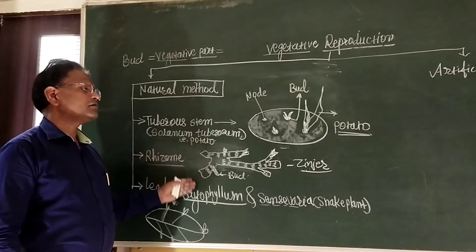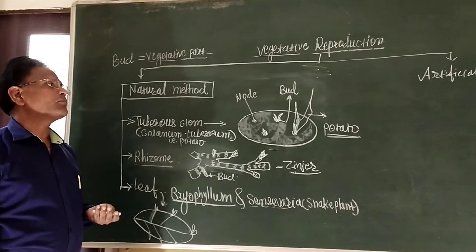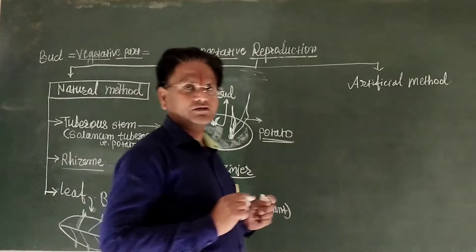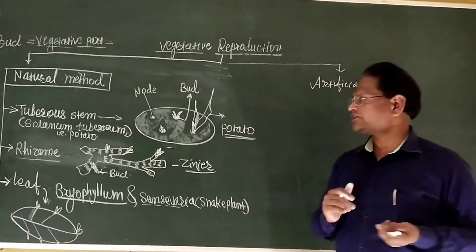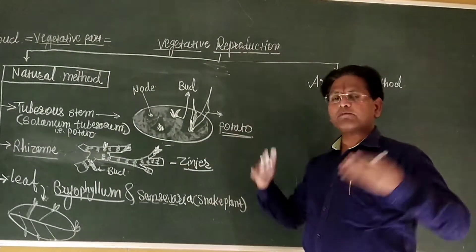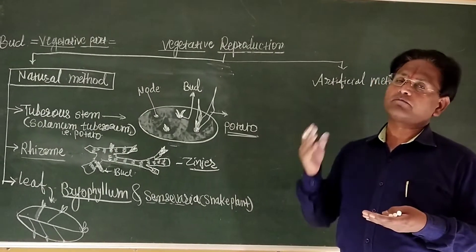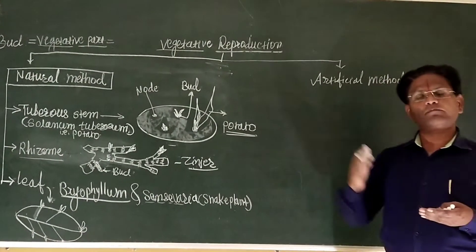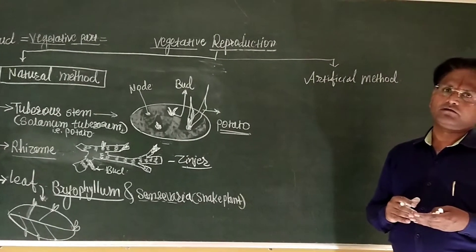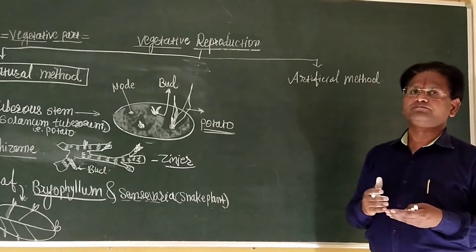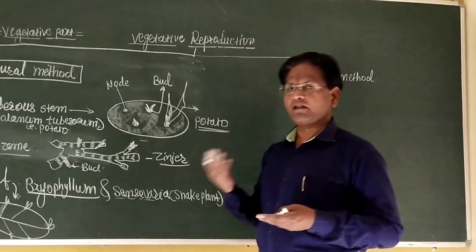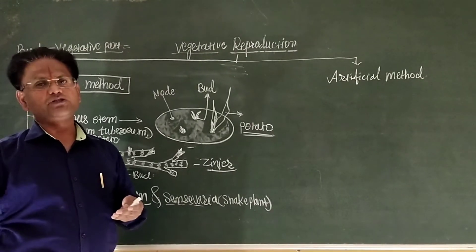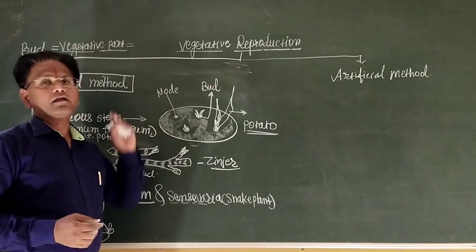Runners are also involved in the natural propagation of plants. In the natural method of vegetative propagation, man-made techniques are not utilized. Other structures such as bulbils — younger shoots with leaves that may detach from the mother plant and produce a young one — are also known as natural vegetative reproduction.